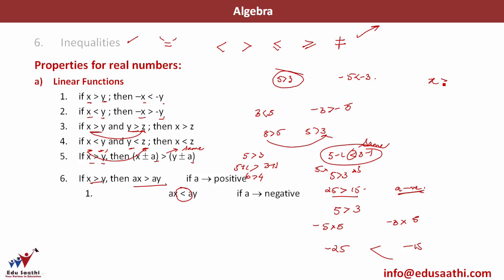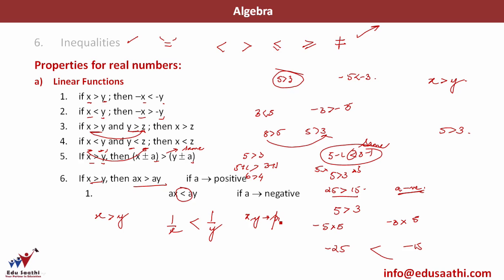Now if x is greater than y, and I take the reciprocal — 1/x and 1/y — what will be greater? For example, if 5 is greater than 3, then 1/5 would be less than 1/3. Since 1/5 is 20% and 1/3 is 33.33%, so 1/x is less than 1/y when x and y are both positive.